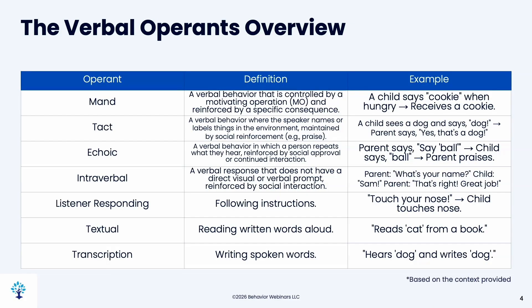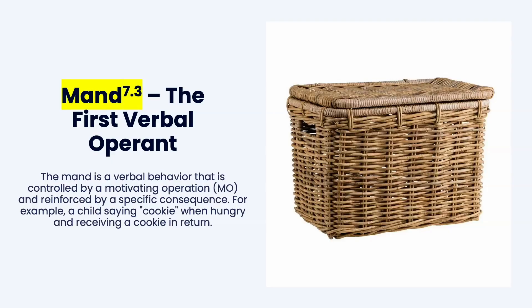These are the types of operants you're going to learn. This is probably more than you might need for the RBT exam, but if you were to move on to other endeavors, you would need all of this. The first verbal operant is the mand. You can think of it as a demand — it's controlled by motivating operations and reinforced by a specific consequence. For example, a child saying 'cookie' when hungry and receiving a cookie in return. Whenever someone says something to gain something, it is a mand.